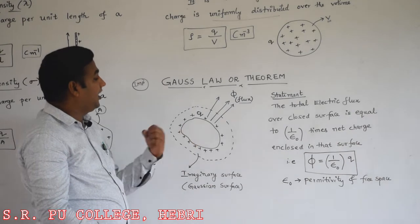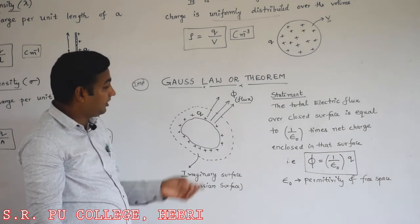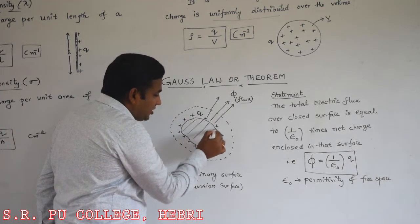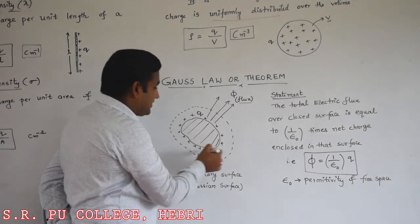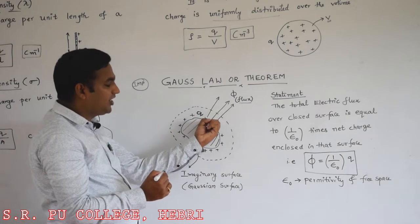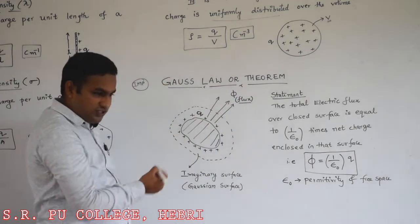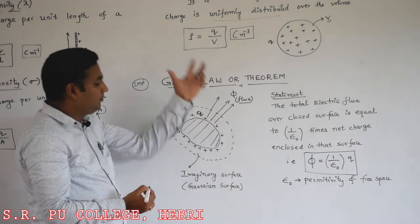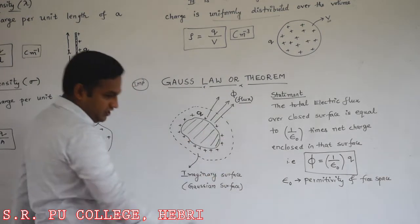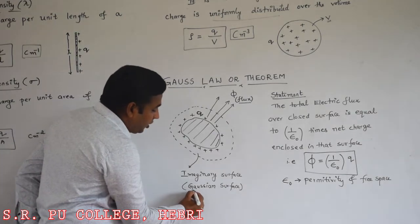By using this, we can think about electric flux, which is the number of electric field lines passing normally through a given surface. All the positive charges are located on the surface of the conductor, and by using this charge, there will be electric field lines coming out, leading towards the concept called electric flux. To study Gauss law, we assume one imaginary surface called the Gaussian surface.